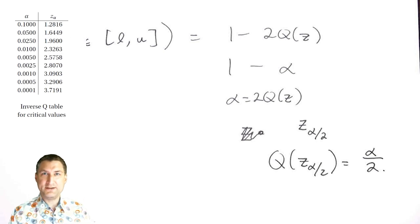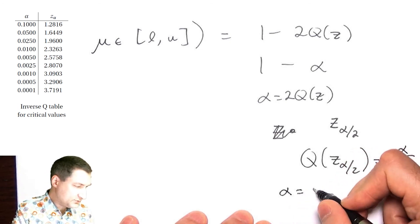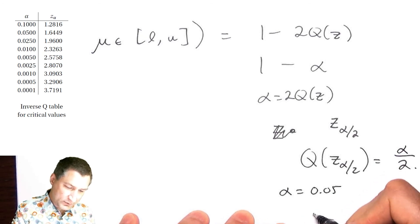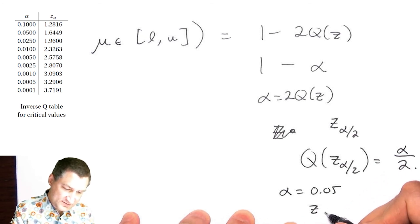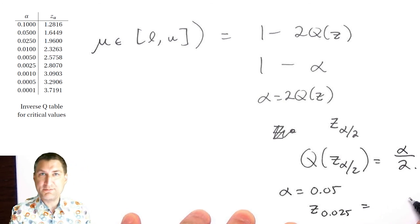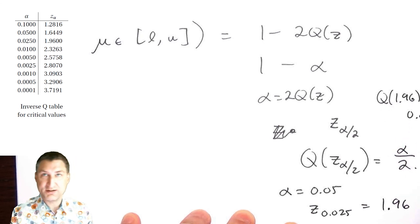If you were doing an exam, I would give you an inverse Q table. For example, if α = 0.05, then I would look for z_{0.025}, which I would find in my table is 1.96. That is, Q(1.96) = 0.025, which is the number that I need.